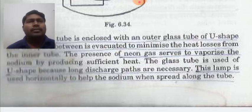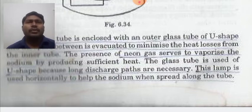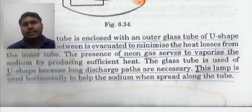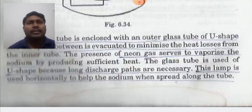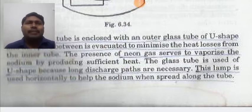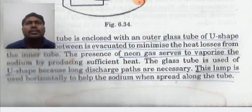The presence of neon gas serves to vaporize the sodium or produce sufficient heat. The glass tube is used in U-shape because long discharge paths are necessary. The lamp is used horizontally — this is very important. The lamp should always be used in horizontal position, not vertical, to help the sodium spread along the tube.